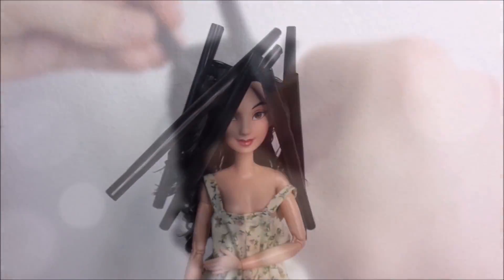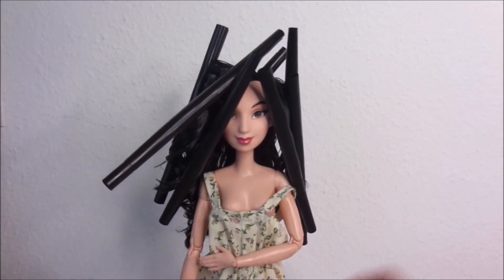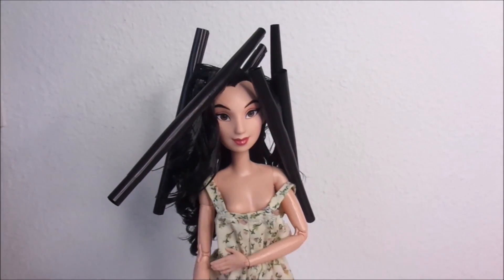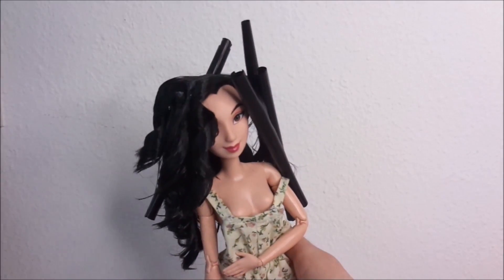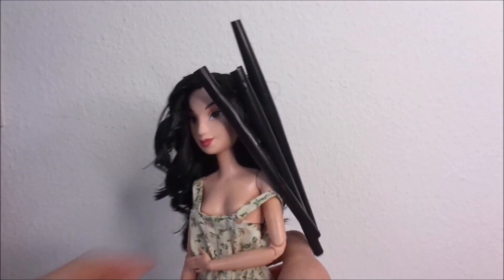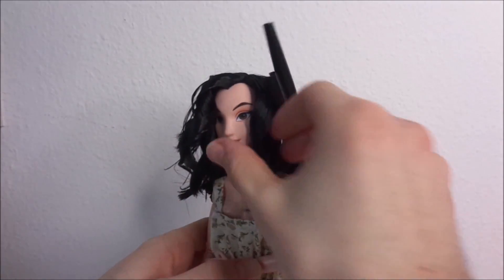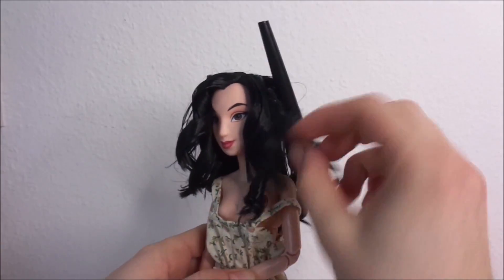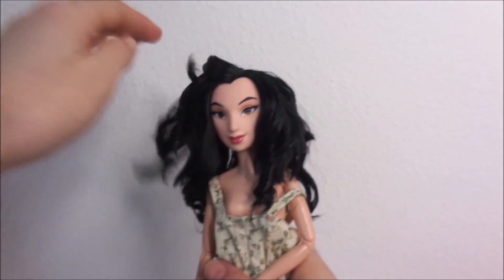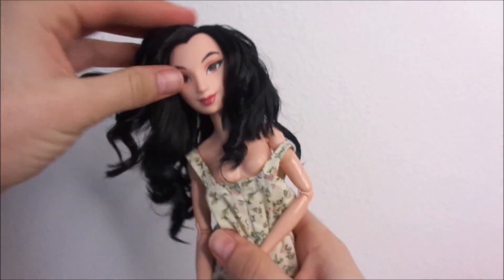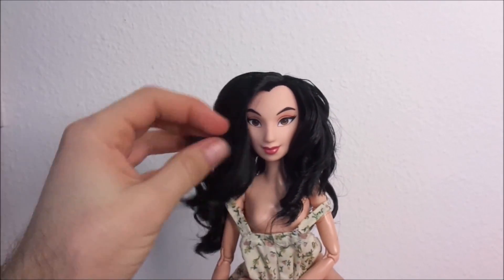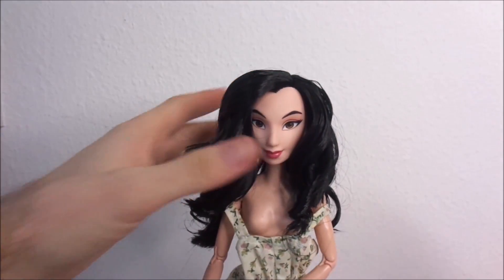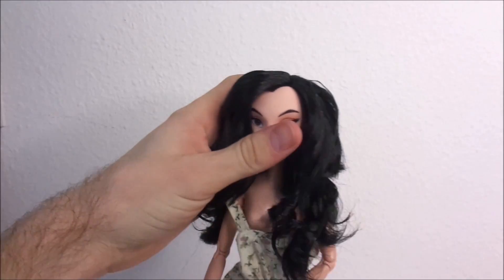After letting those straws sit overnight I take them out to reveal the curl. To give it a perfect blend I brush and finger comb the hair. Then I also position some of the top sections over to hide the extensions the best that I can.